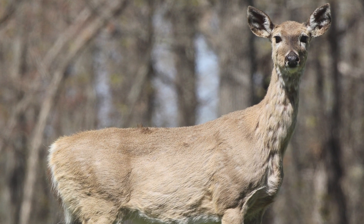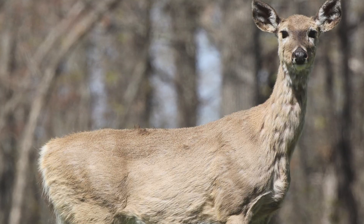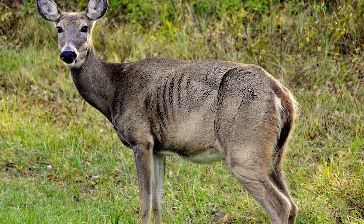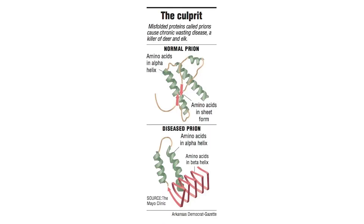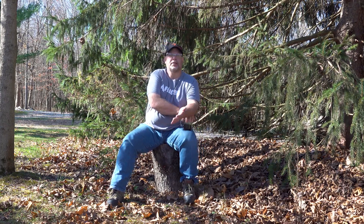Once a deer has that prion, it is able to go up to other healthy like-proteins and cause them to fold too. It just keeps progressing that way over time until enough has built up that it causes all of these issues.